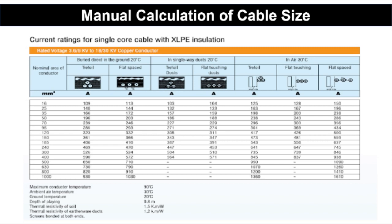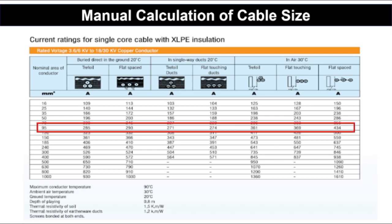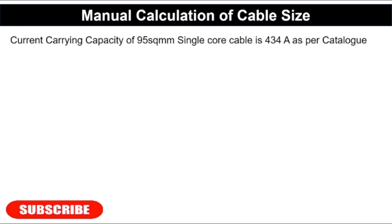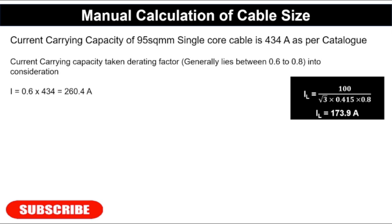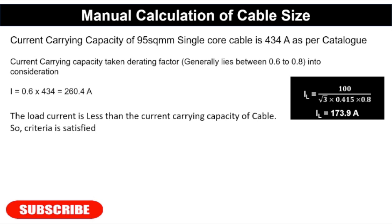Now we note the current rating of the 95 mm² cable from the catalog. The current carrying capacity of the 95 mm² single-core cable is 434 amperes in air at 35°C. Taking the derating factor of 0.6 into account, the derated current rating is: I = 0.6 × 434 = 260.4 amperes. Our load current is 173.9 amperes, which is less than 260.4 amperes, so the current carrying capacity criterion is satisfied.